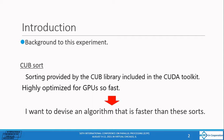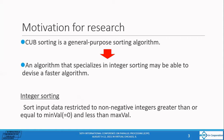This sort is fast because it is highly optimized for the GPU. I wanted to devise an algorithm that is faster than cub-sorting. Since these sort are general purpose sorting algorithms, I thought that an algorithm specialized for integer sorting might be able to devise a faster algorithm.